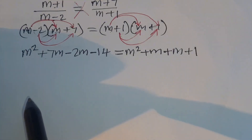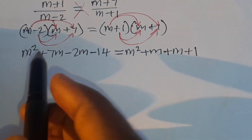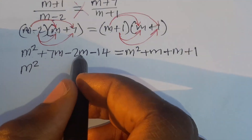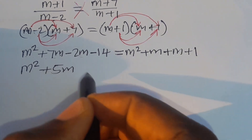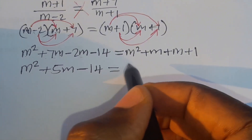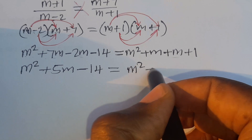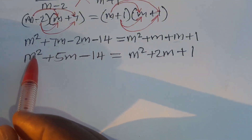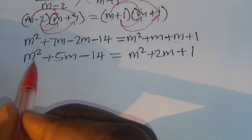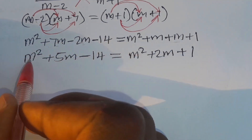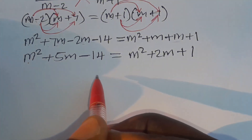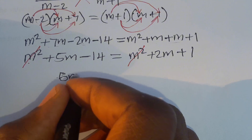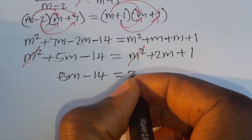Now let's simplify on both sides. On the left we have m squared, then 7m minus 2m is 5m, then minus 14. On the right we have m squared, plus 2m, plus 1. Since both sides have m squared, they cancel out, leaving 5m minus 14 equals 2m plus 1.